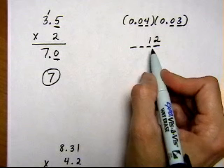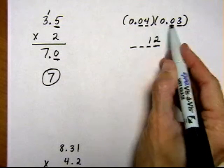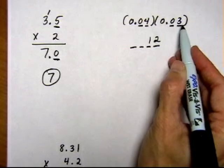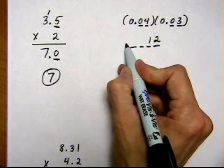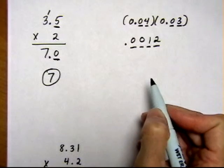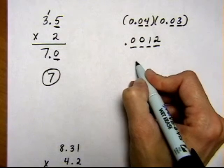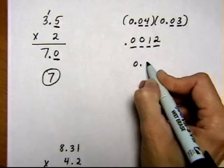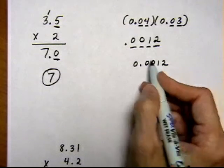But I need to add 2 more because I need 4 decimal places to equal the 4 decimal places that were being multiplied. And I make that happen by putting a decimal point right there, adding the 0s as placeholders. So my final answer for this one is 0.0012.